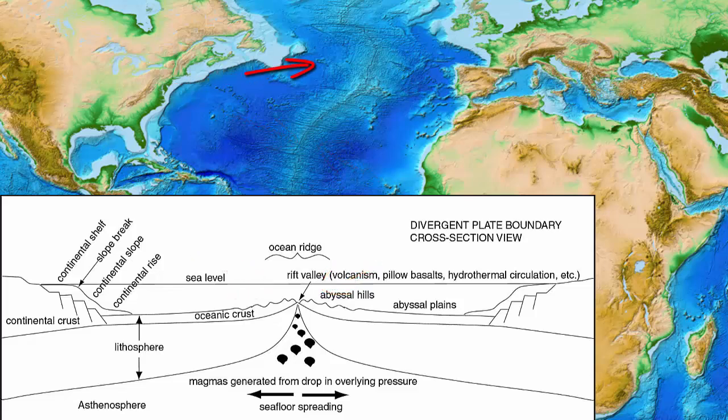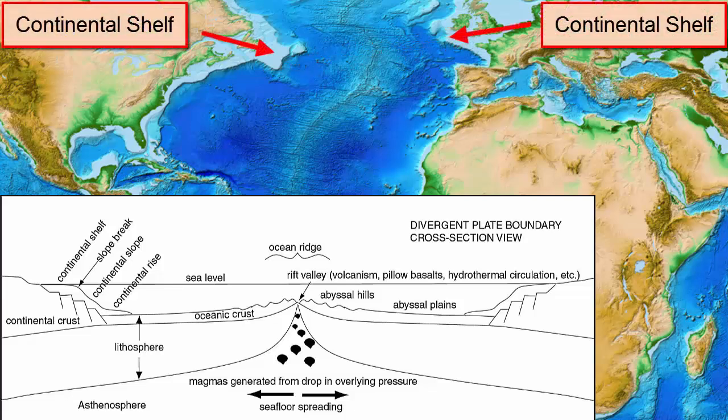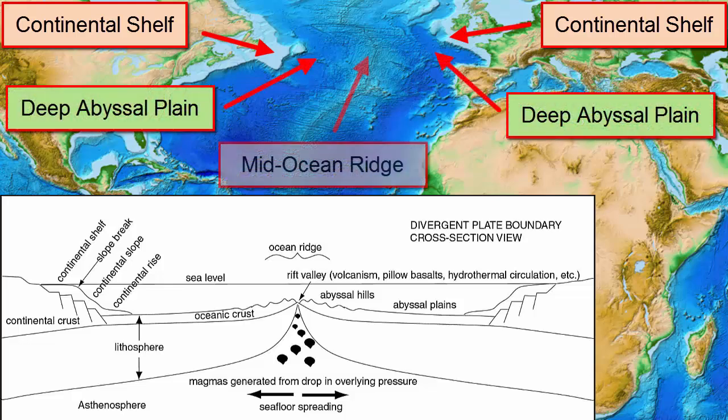Thus, when traveling from New York to London, we'll experience wide continental shelves on both margins, deep abyssal plains, and a mid-ocean ridge in the center.